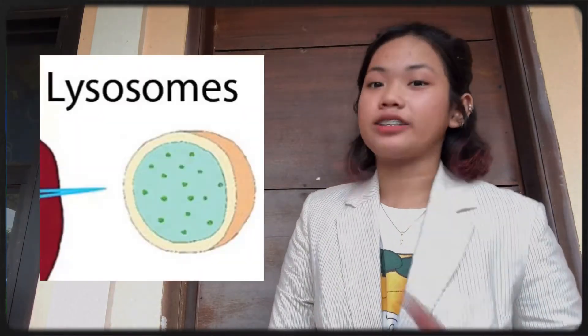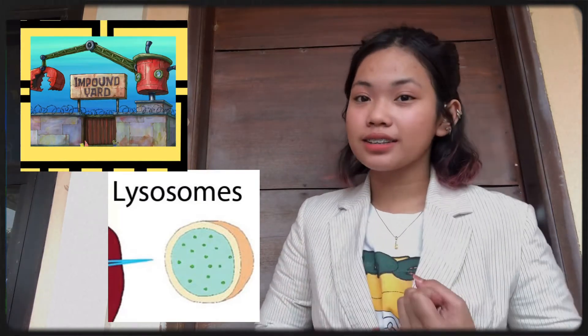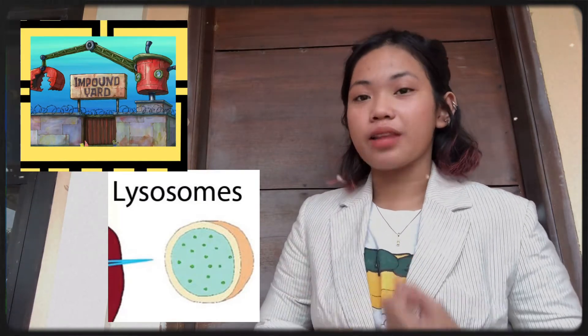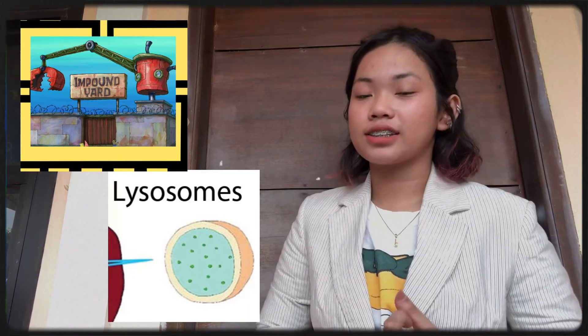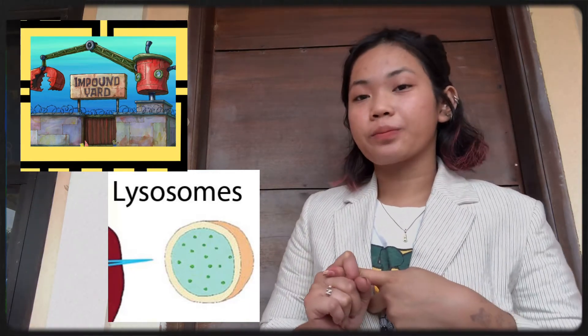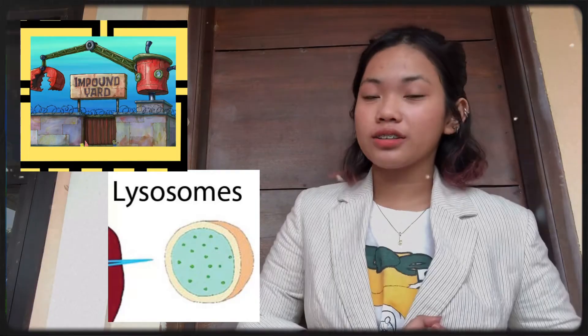Fifth is the mitochondria. The mitochondria in the Bikini Bottom is the Krusty Krab because the mitochondria is the powerhouse of the cell that helps generate energy, like the Krusty Krab — they make food and help people have energy. Sixth is the junkyard in the Bikini Bottom, which represents the lysosomes. Lysosomes digest food and break down the cell when it dies. Like the junkyard, they break down old things and waste.